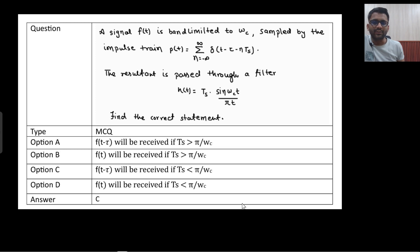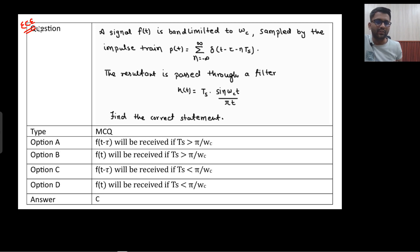Hi everyone, welcome to Prepfusion. In this video we are going to discuss this particular question which was asked in GATE EC examination for term 2025. GATE EC 2025, and when we gave the answer, we gave the answer to be C, which is wrong.